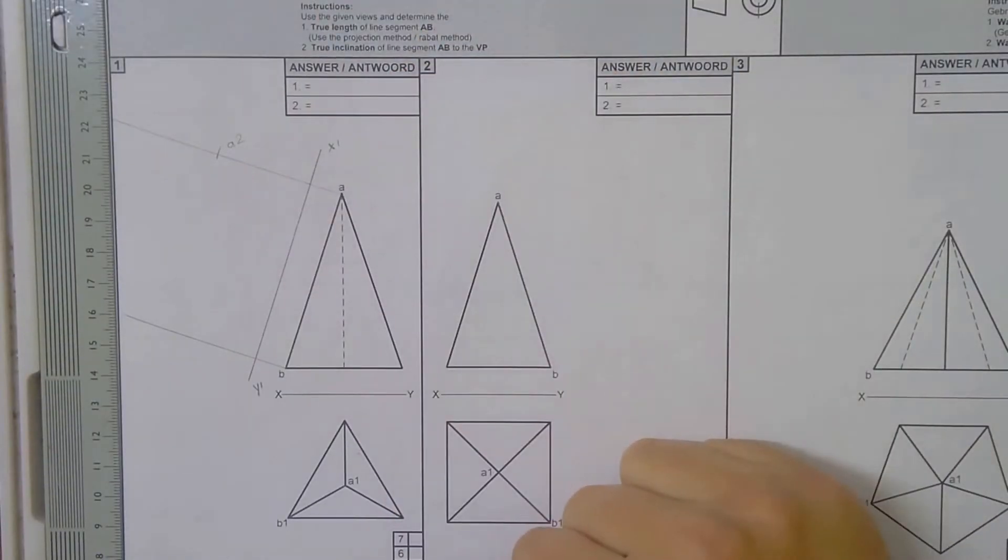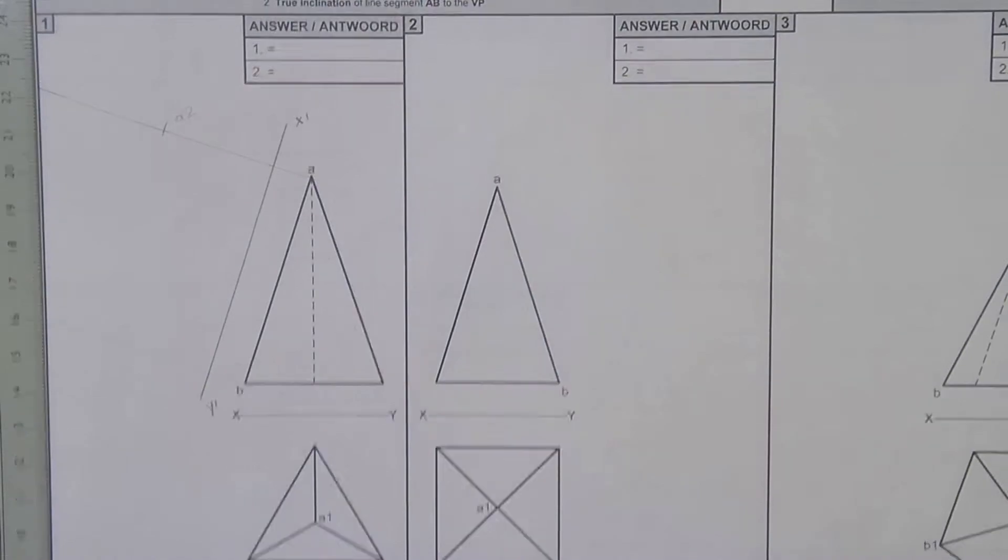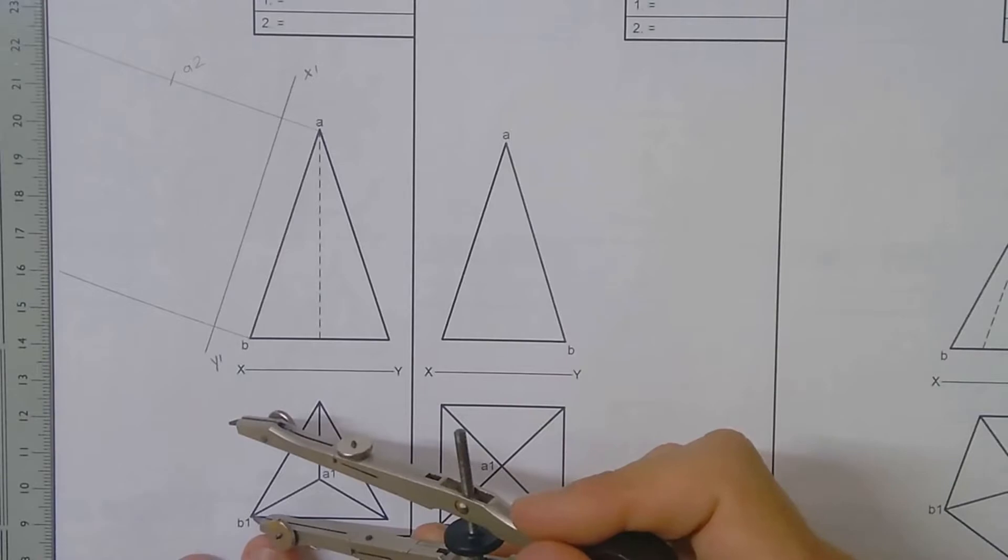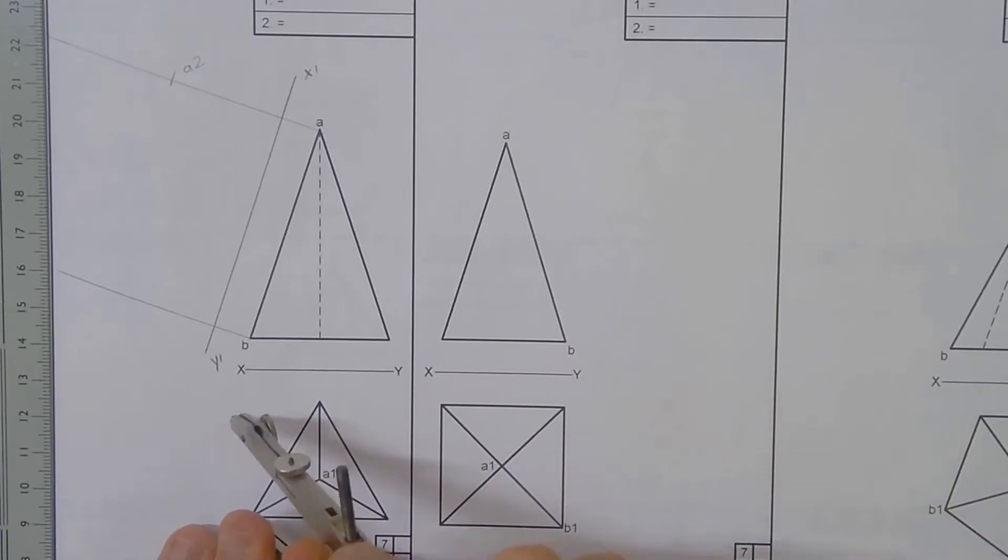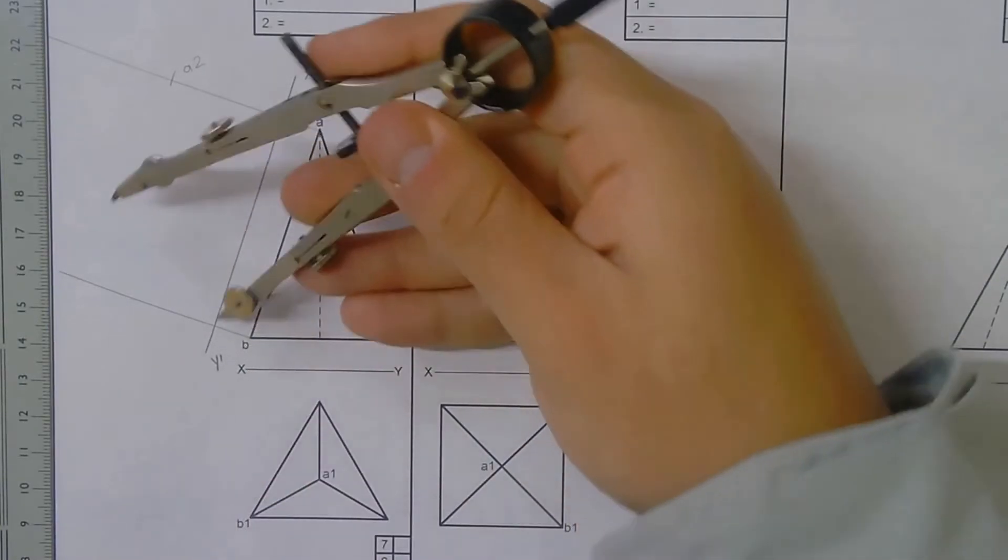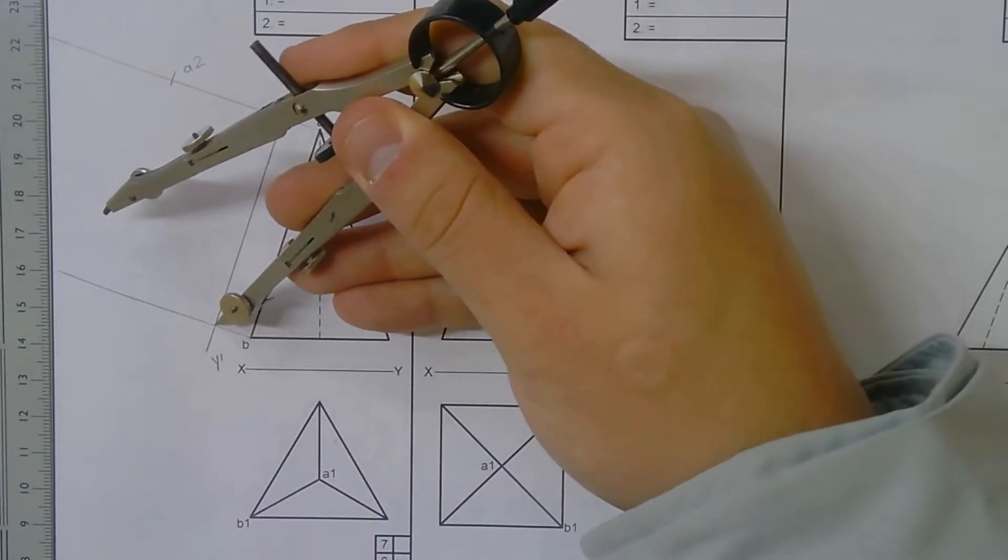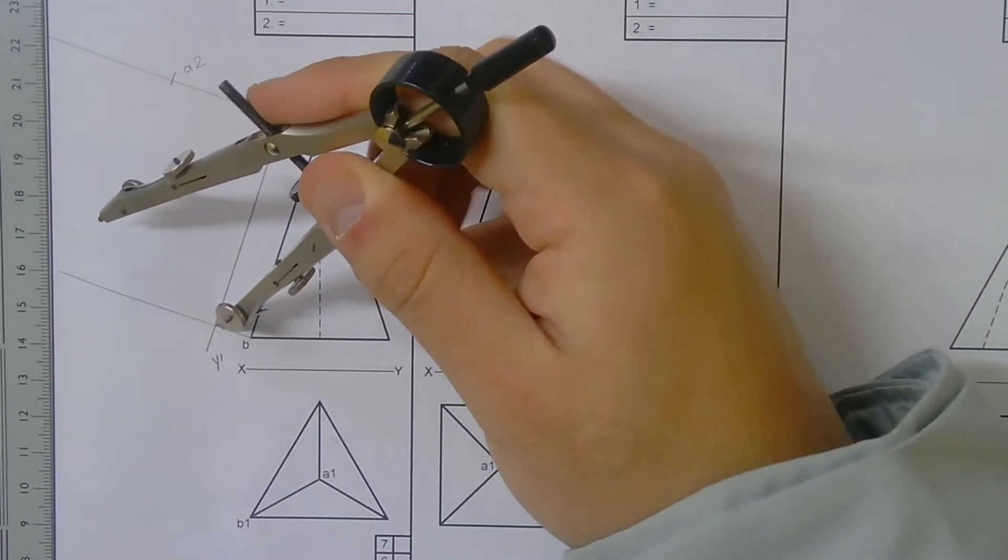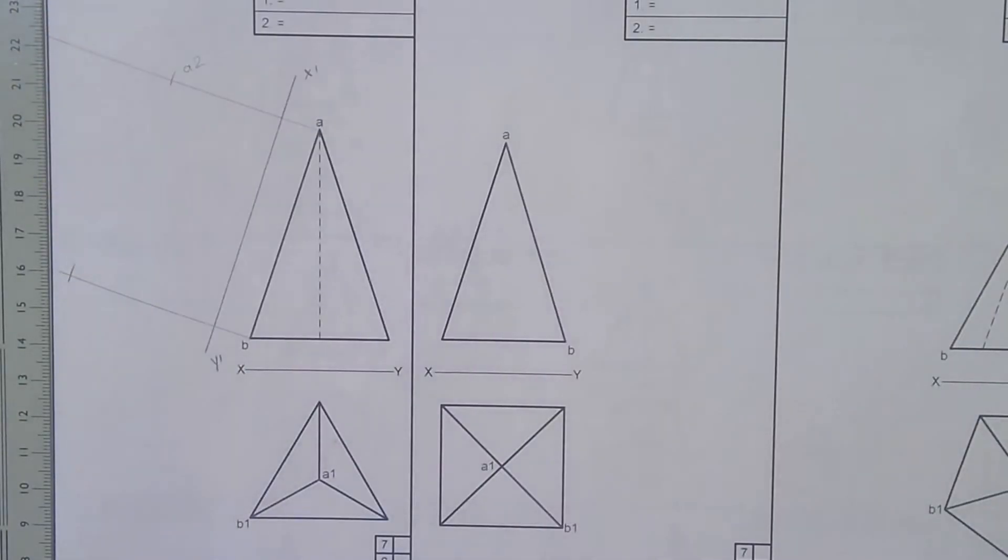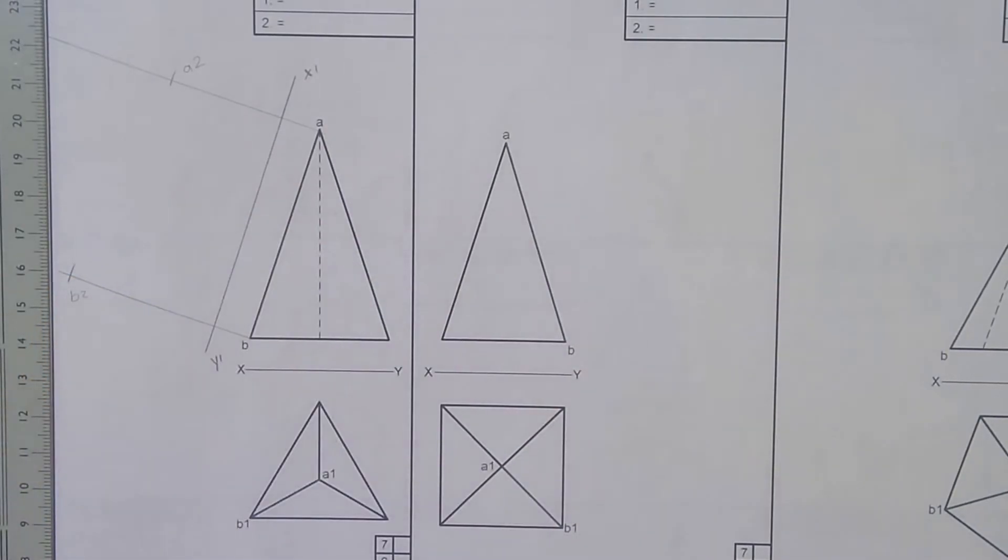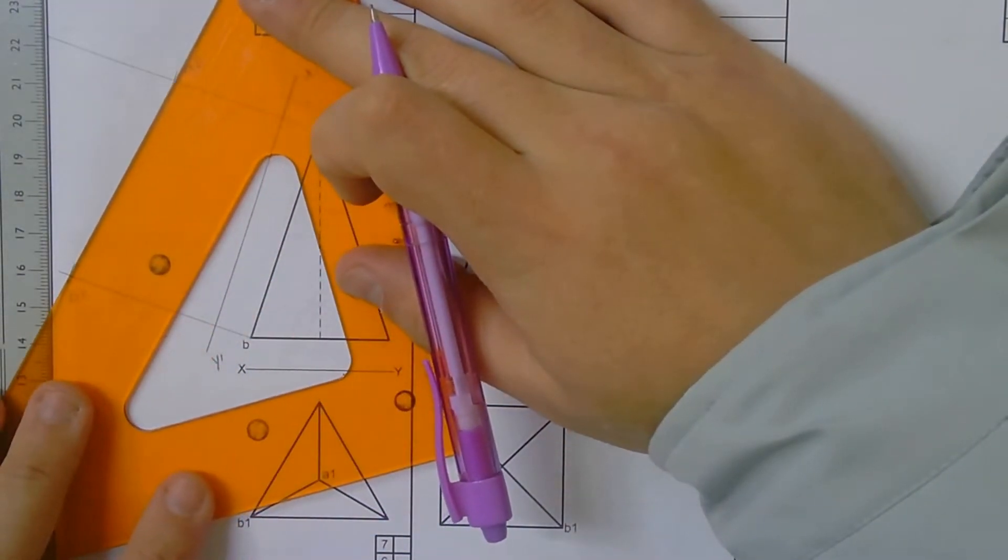Now we're going to measure metal point on B1 and measure to the XY line. Then we go metal point on B, to the XY line, and we mark off over there. We label that B2, and then we go and link those two lines.